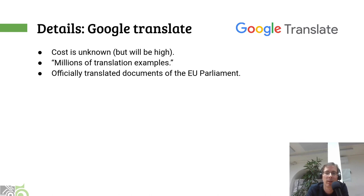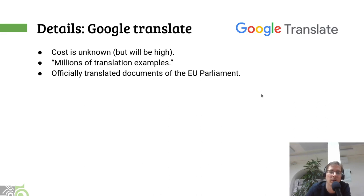Another example, perhaps better known, is the Google Translate service, which is actually powered by deep learning models. Because it's a project by Google, they don't really disclose many details, so we don't know exactly how much it cost, but we can tell it was quite high. What they wrote is that they trained the model on millions of translation examples. Out of curiosity, where did they actually get those millions of examples? They used the EU Parliament, because many — maybe all — documents are translated to all those member languages of the EU. So it's a huge source of high-quality translation documents.